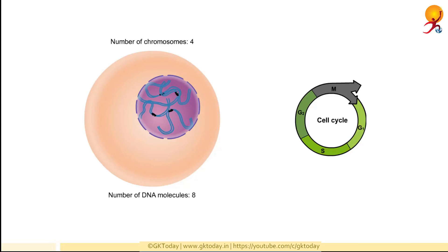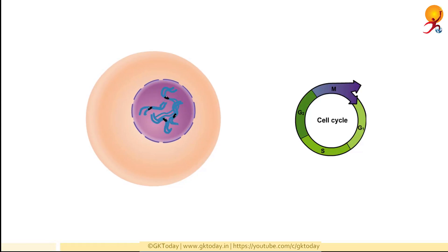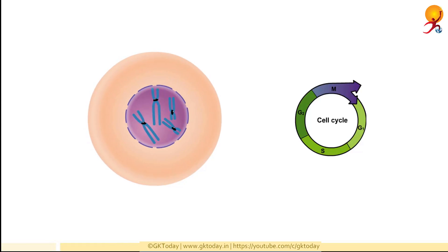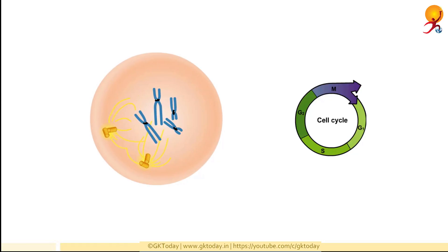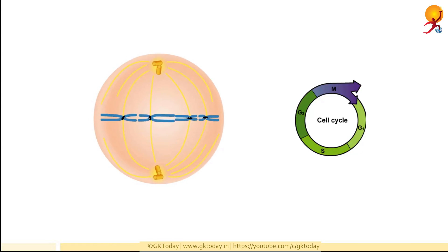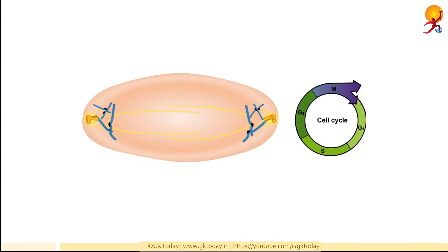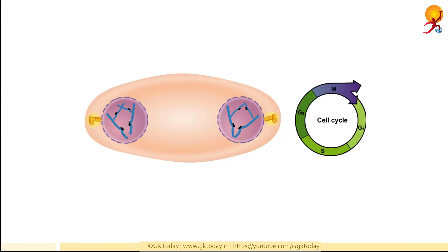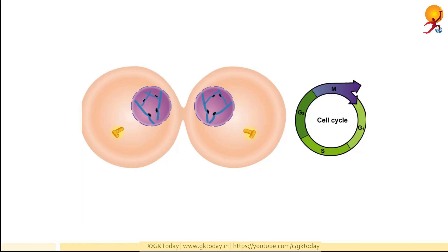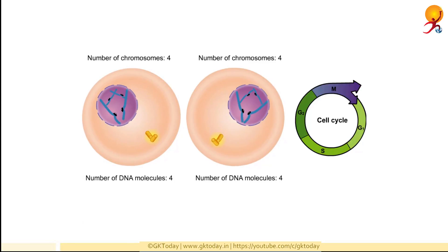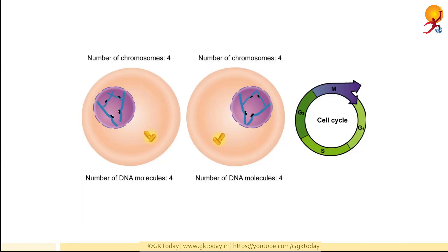In M phase mitosis, the nuclear membrane breaks down and chromosomes become separated into two equivalent sets. The chromosomes condense, line up in a row, and then the sister chromatids separate and move to opposite poles of the cell. After the chromosomes separate, the nuclear membrane reforms around each set of chromosomes and the cell undergoes cytokinesis, the division of cytoplasm. Finally, when cell division is complete, each daughter cell contains a complete set of chromosomes — that is, each daughter cell has 4 chromosomes and 4 DNA molecules, as did the parent cell.